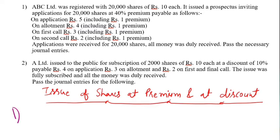That means rupees 14 per share, i.e., 10 plus 4, including premium. 20,000 share applications were received. We will now journalize these transactions, starting with the first question.